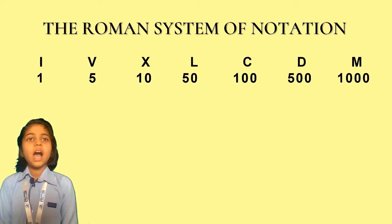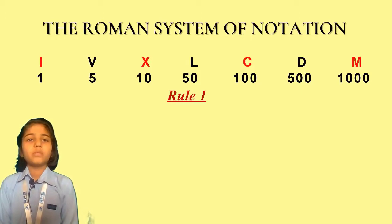In this system, symbol I represents 1, V represents 5, X represents 10, L represents 50, C represents 100, D represents 500, and M represents 1000.